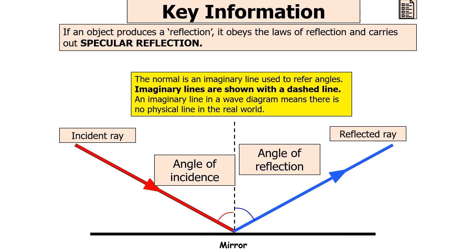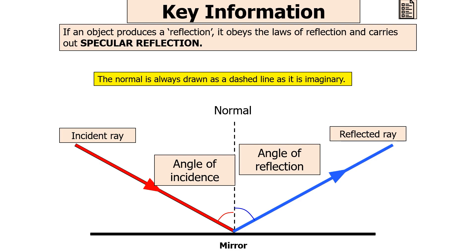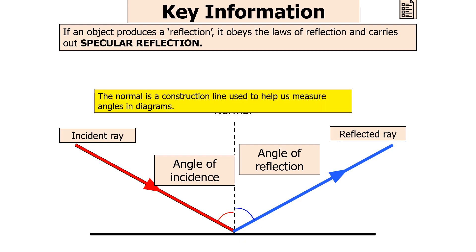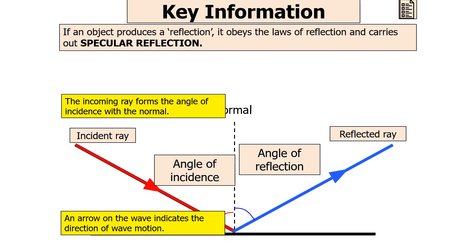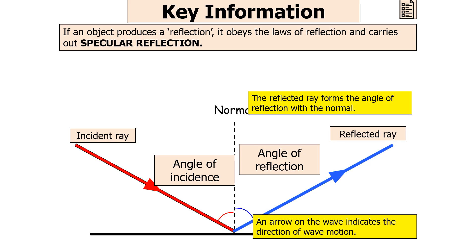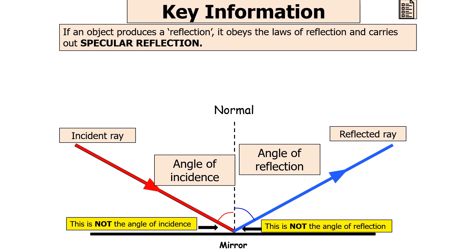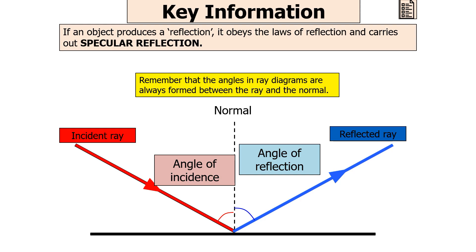In our ray diagram, the normal is an imaginary line used to refer to angles, always drawn as a dashed line since it has no physical presence in the real world. The normal is perpendicular to the surface. The incoming ray forms the angle of incidence with the normal, and the arrow on the wave indicates the direction of wave motion, whilst the reflected ray forms the angle of reflection with the normal. The angle must always be formed with the normal — not with the surface itself.